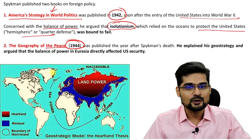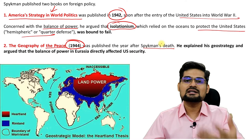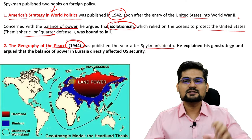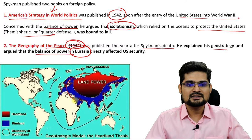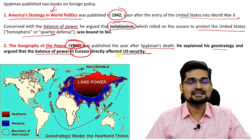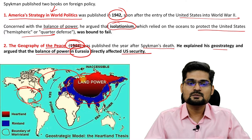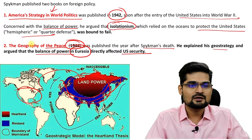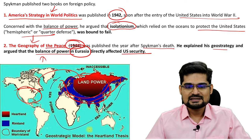This was a very important volume, published just after Speakman's death — so he was not there to present his own work, but it was eventually published. He explained his geostrategy and argued that the balance of power in Eurasia, as the heartland theory suggested, directly affected US security. So if the US has to take care of its security, it needs to look into the rimland part.